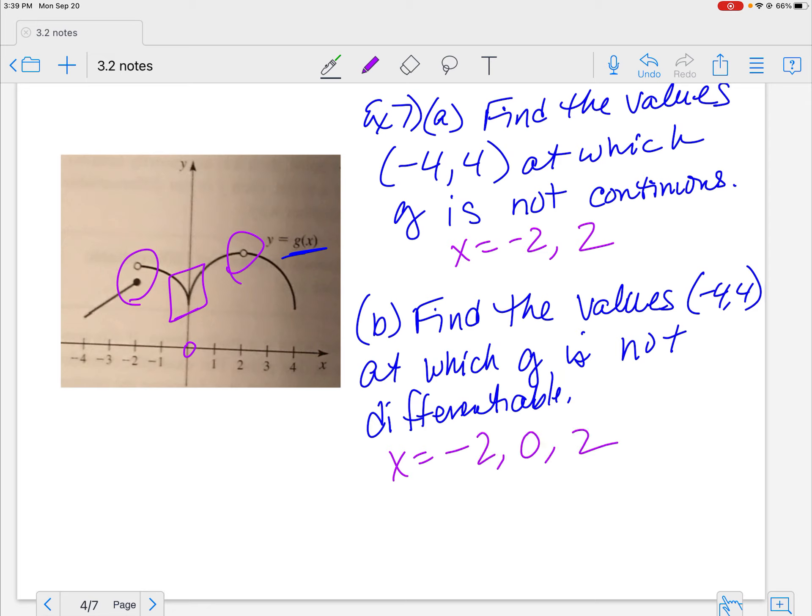It is continuous at my cusp. However, it is not differentiable because I have that vertical tangent. So it can be continuous but still not differentiable. But if it's not continuous, that's an automatic not differentiable. Let's talk more about these graphs a little bit.